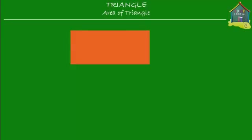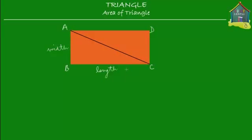Let me call this rectangle A, B, C, D. So I have a rectangle ABCD and just like any rectangle, it's got a length which is the longer side and a width. Next, I'm going to cut this rectangle into two, into two triangles. This is how I'm going to cut the rectangle into two halves to make two equal triangles.